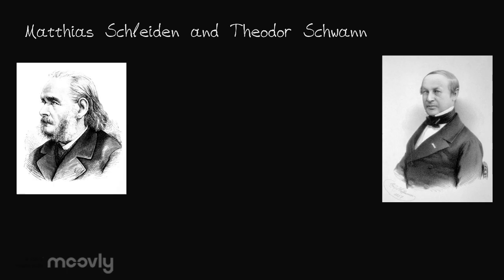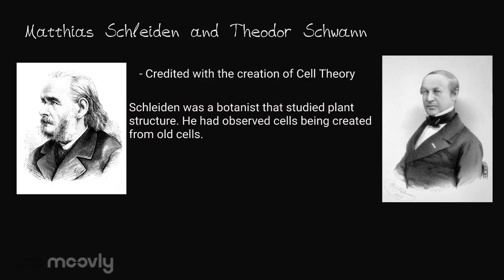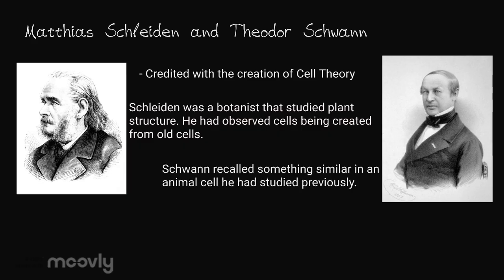Matthias Schleiden and Theodor Schwann are credited with the creation of cell theory. Schleiden was a botanist that studied plant structure. He mentioned to Schwann that he had observed new cells being created from the nuclei of an old cell. Schwann recalled seeing something similar in animal cells he had studied previously. They recognized the importance of this conclusion and together co-founded cell theory in 1839.